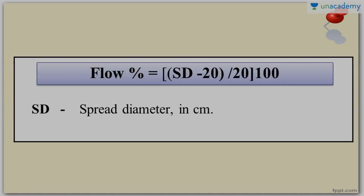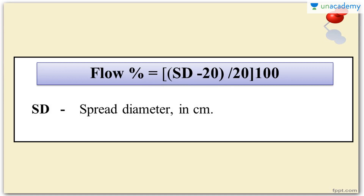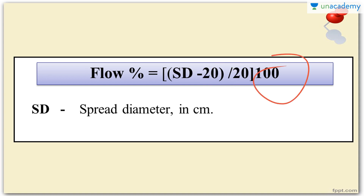The calculation is straightforward. Flow percentage can be calculated as: (Spread Diameter minus the bottom dimension of the cone divided by the bottom dimension) multiplied by 100. The bottom dimension is 20 cm for the slump cone mold, or 25 cm if using the Abrams cone.